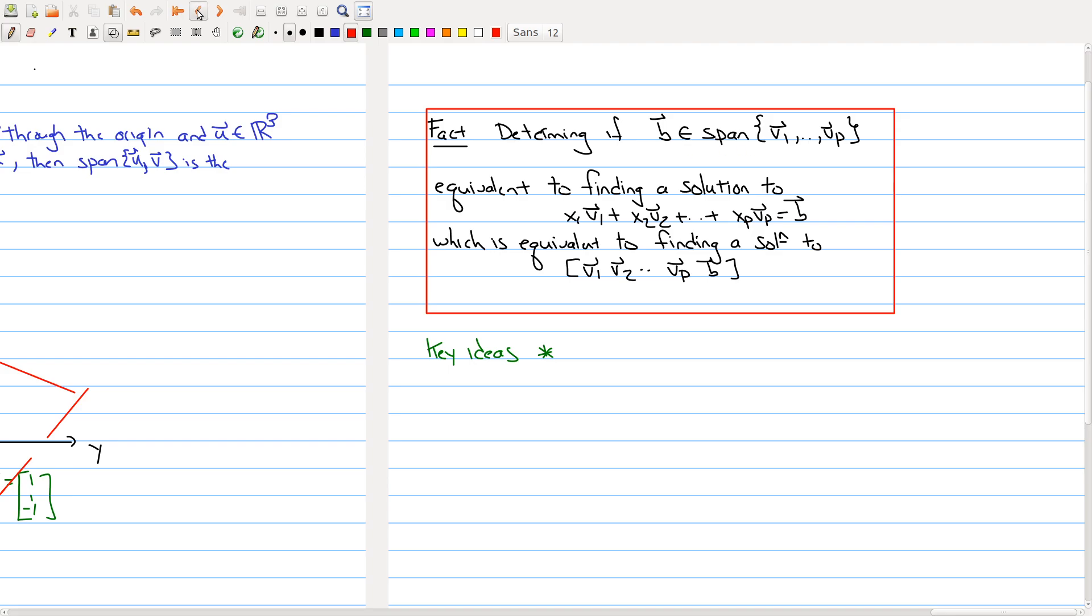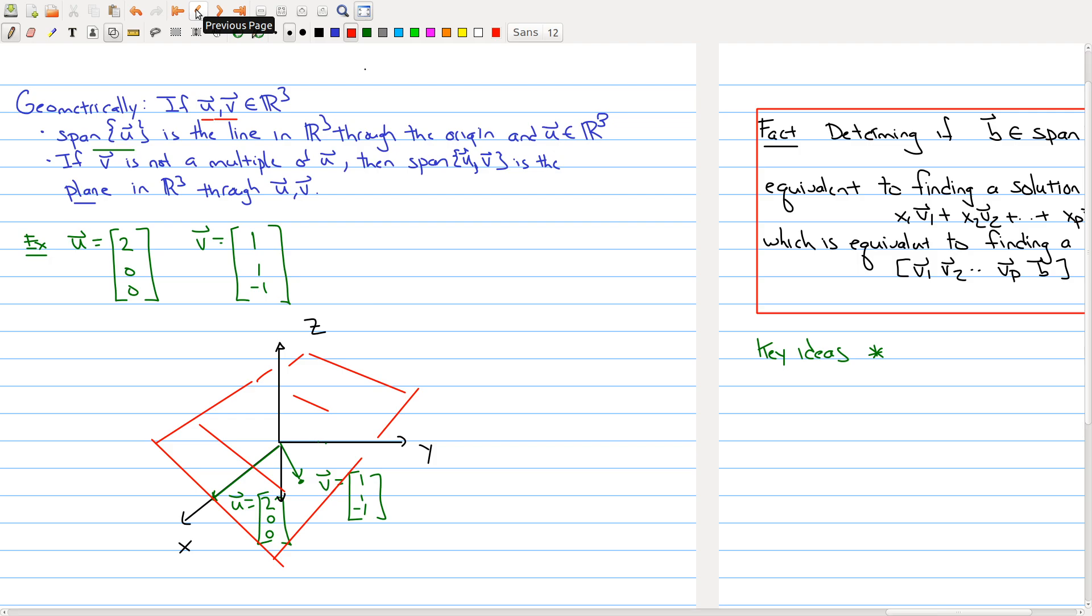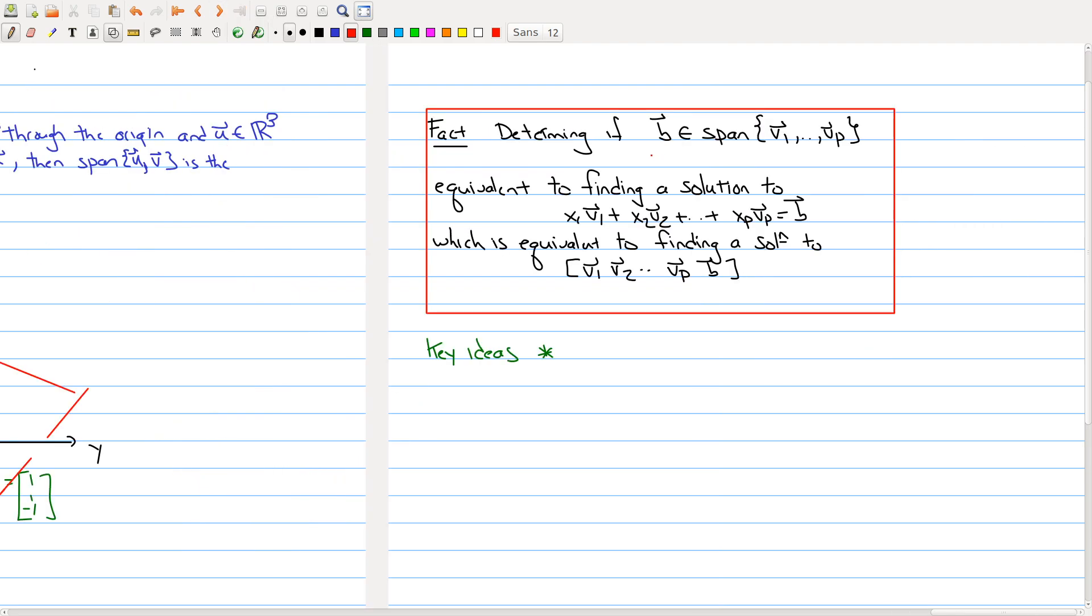If we go back to my picture, we may want to ask: here's a vector, does it belong in the plane? What that means is to check if b belongs to the span, you should be able to write b as a linear combination of your vectors v1 through vp.